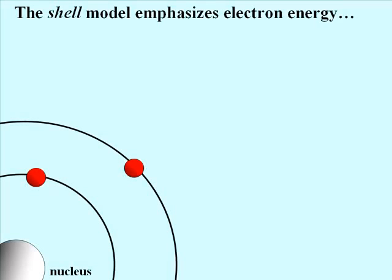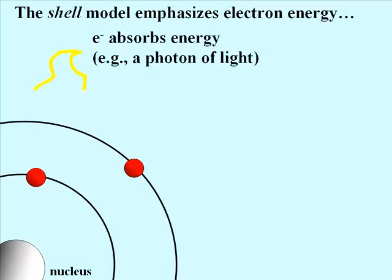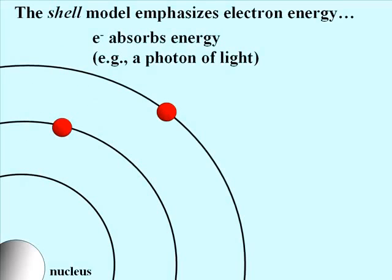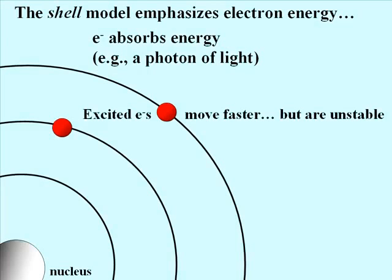Here's another look at the shell model of an atom. When an electron absorbs a photon of light, as shown here, or an equivalent amount of electrical or any other kind of energy, the electron becomes excited and jumps to the next higher shell, next higher energy level. When the light or electricity is turned off, the electrons will return to their so-called resting state, that is to their original energy level or energy shell.